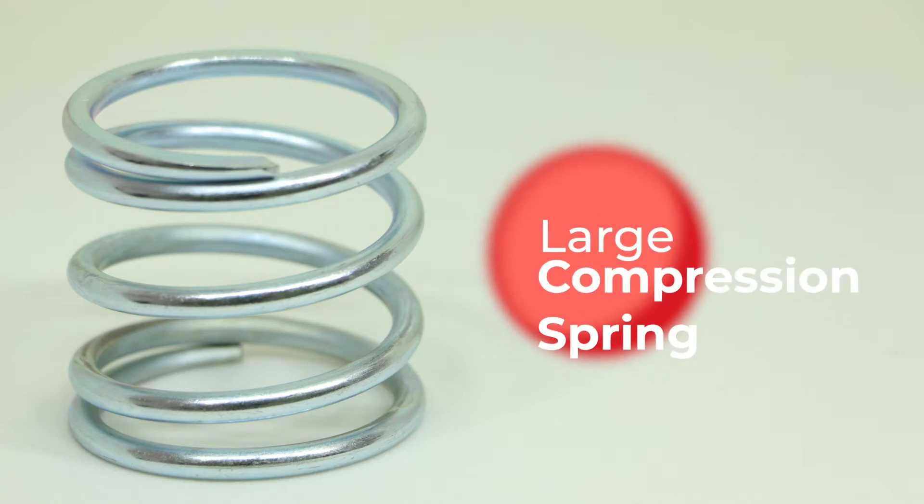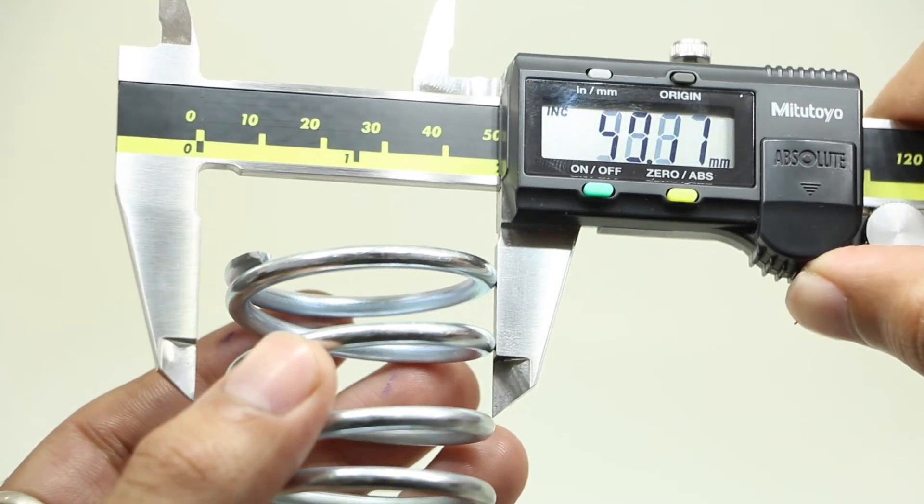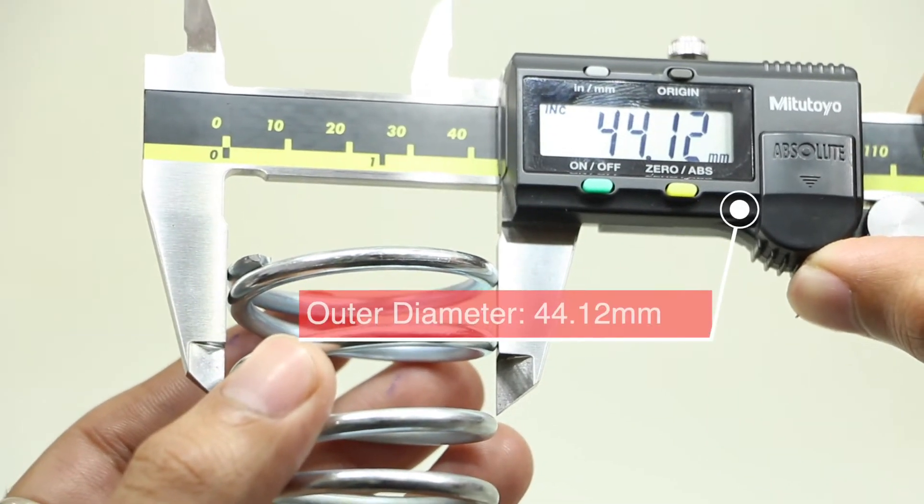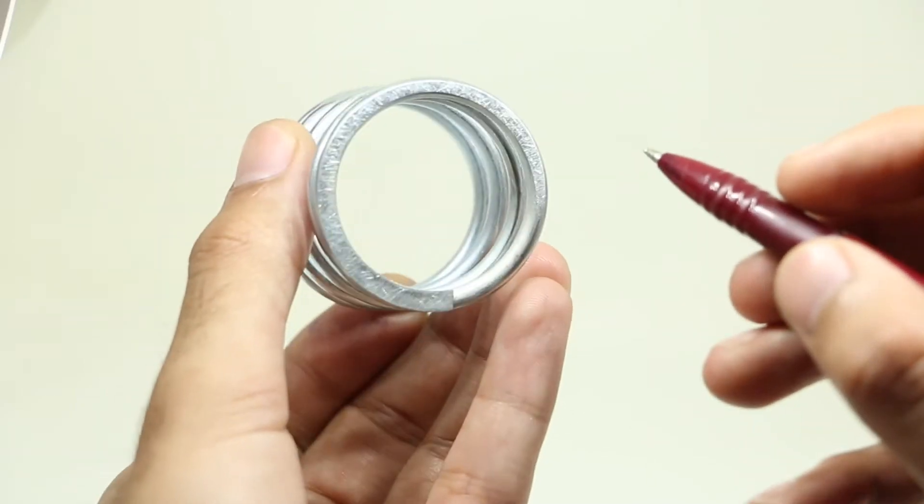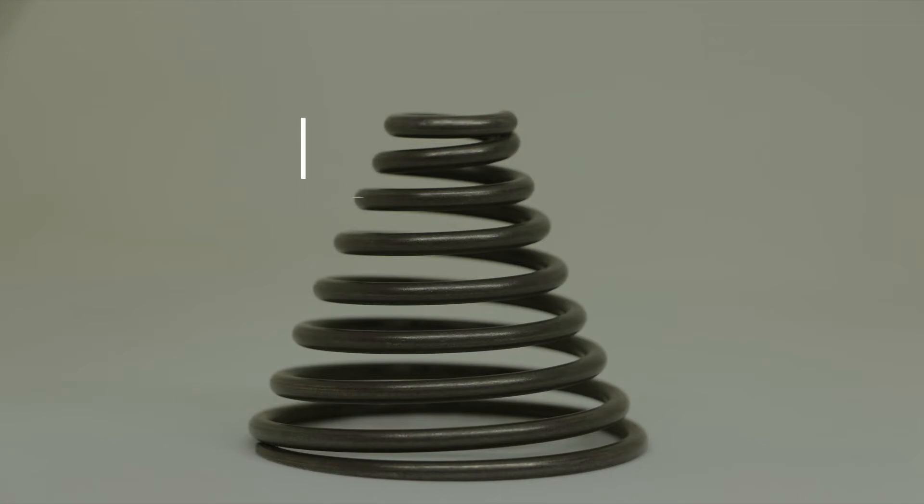Third is large compression spring. In this case the OD is 44.12 mm and free length is 42.38 mm. This particular spring is right hand spring.